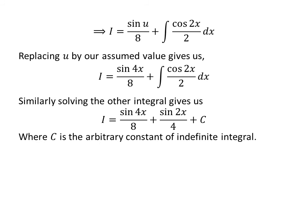As we had solved the integral of cosine of 4 times x upon 2 with respect to x, similarly we get i is equal to sine of 4 times x upon 8, plus sine of 2 times x upon 4, plus capital C. Capital C is the arbitrary constant of the indefinite integral. Never forget to add this constant at the end.